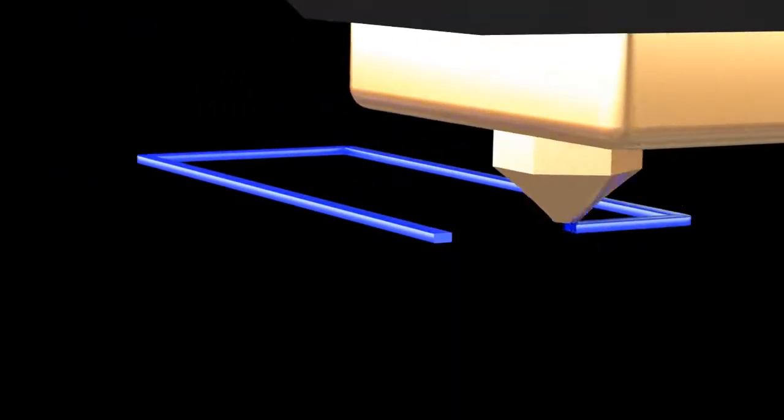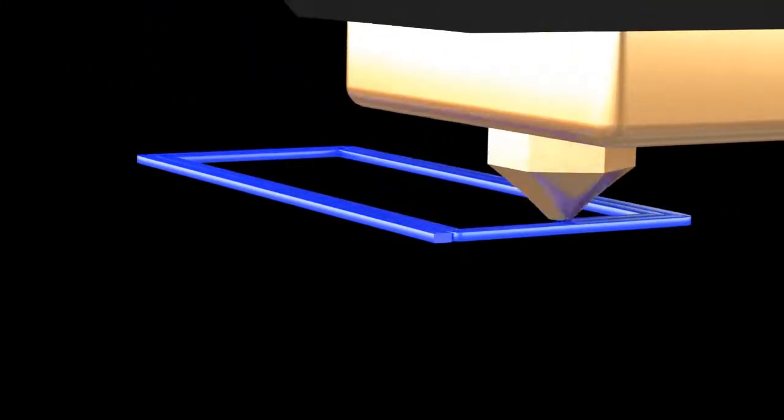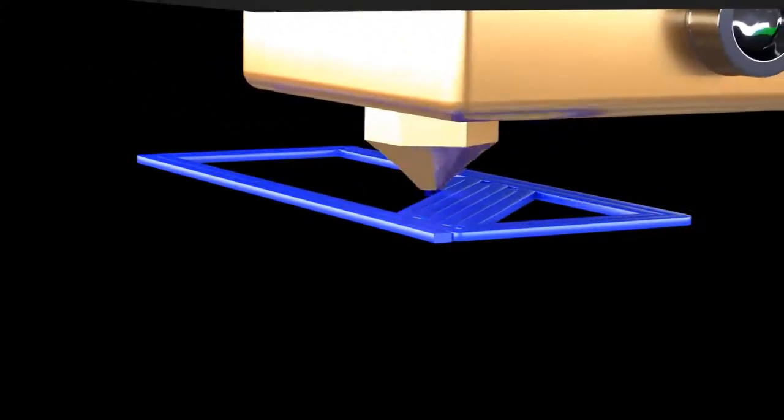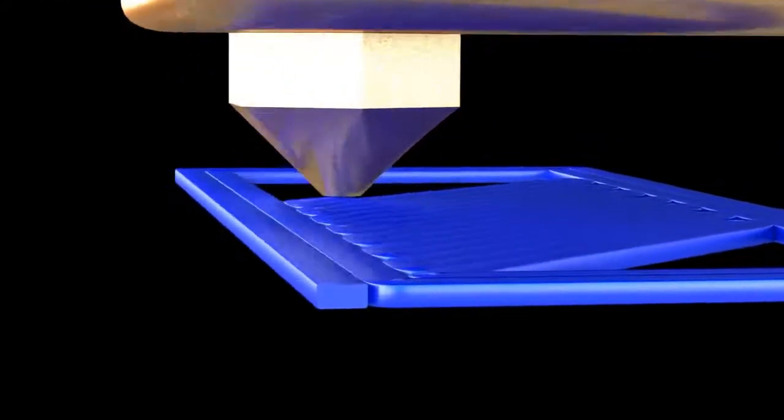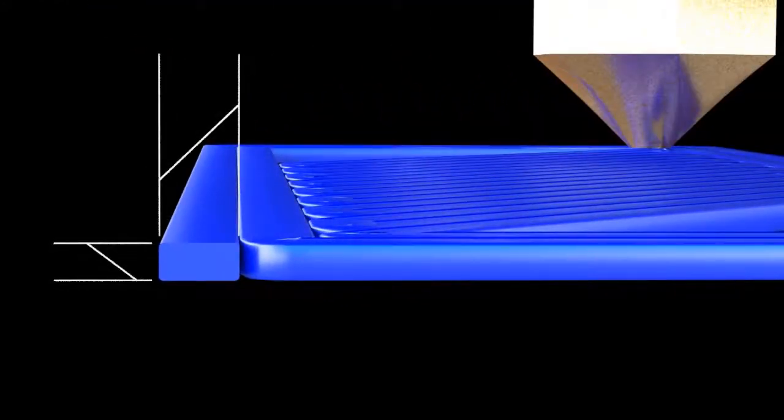Now let's have a look at our rectangular prism being printed and we'll only look at the first layer for this instance. What we'll see is because I've got a 0.4 millimeter nozzle on my 3D printer and I've set the layer height to be 0.2 millimeters I'm able to cover twice the distance on the horizontal axis as opposed to the vertical axis.